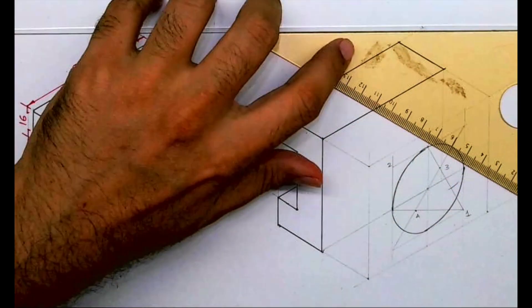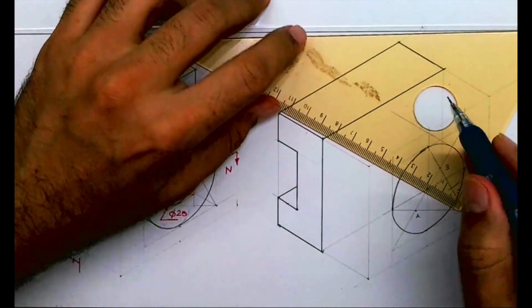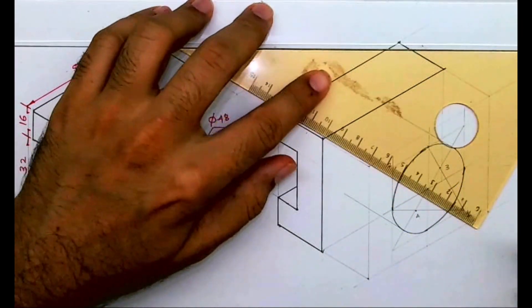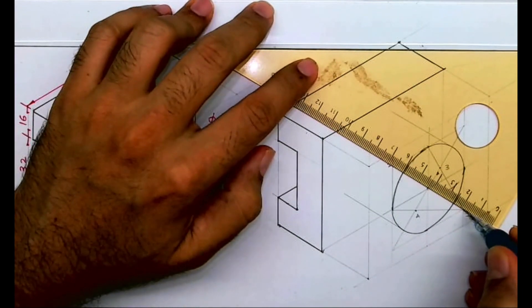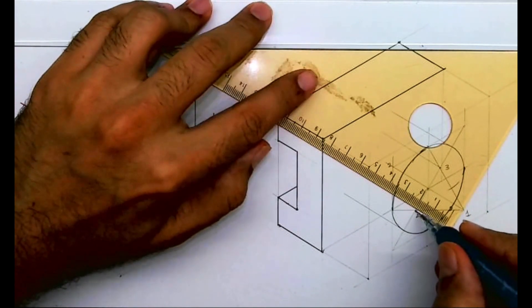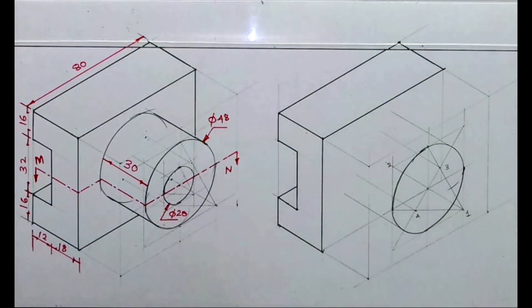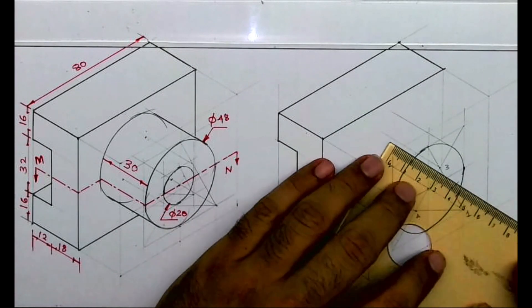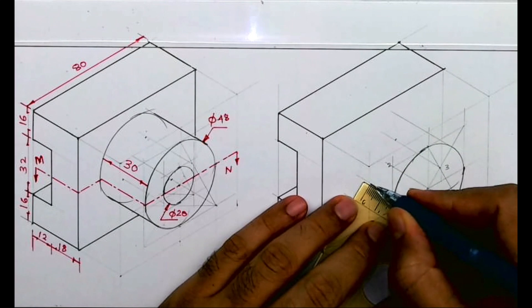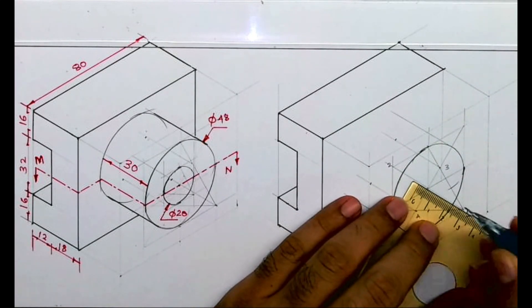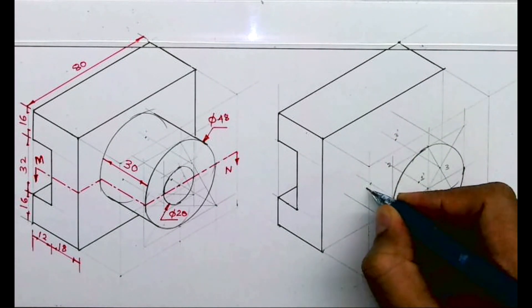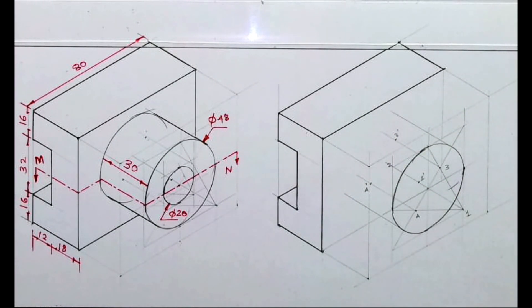After that, we have to take this inside by how much? 30. So we'll draw a tangent and we'll take points 1, 4, and 3 behind by 30. Why we are taking 30? Because width is 30. If you see the inside view, this is 30. So from 3 we'll go inside by 30, from 4 we'll go inside by 30, and from 1 we'll go inside by 30. This is 1 dash, 3 dash, and 4 dash.